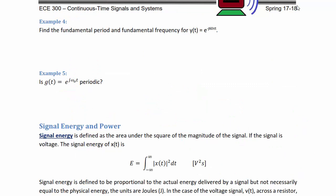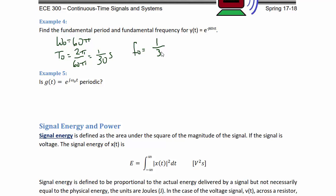Example four: find the fundamental period and fundamental frequency for y(t) = e^(-j60πt). So ω₀ = 60π. Therefore T₀ = 2π/60π = 1/30 seconds. So f₀ = 30 Hz, or in radians per second, 2π/30 radians per second.